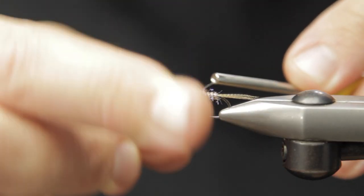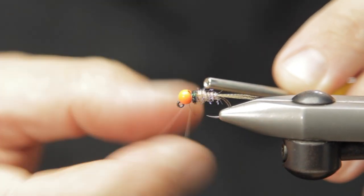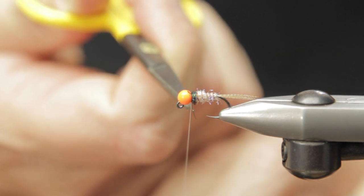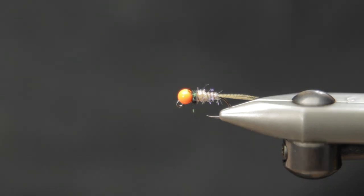We'll go ahead and do a whip finish here, making sure to pull that in nice and tight, and trim off the excess. And that is the Freebird. Hopefully this helps fill your box. Thanks for watching, guys. We'll catch you next time.